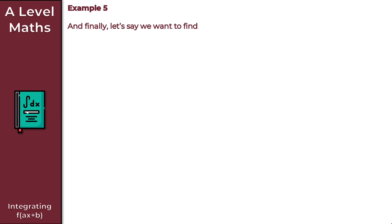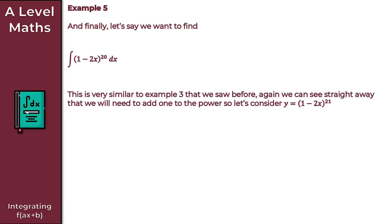Moving on to the very last example, Example 5. We want to integrate (1 − 2x)^20 with respect to x. This is very similar to Example 3. We add 1 to the power and consider y = (1 − 2x)^21. Differentiating y with respect to x by the chain rule gives dy/dx = −42(1 − 2x)^20.